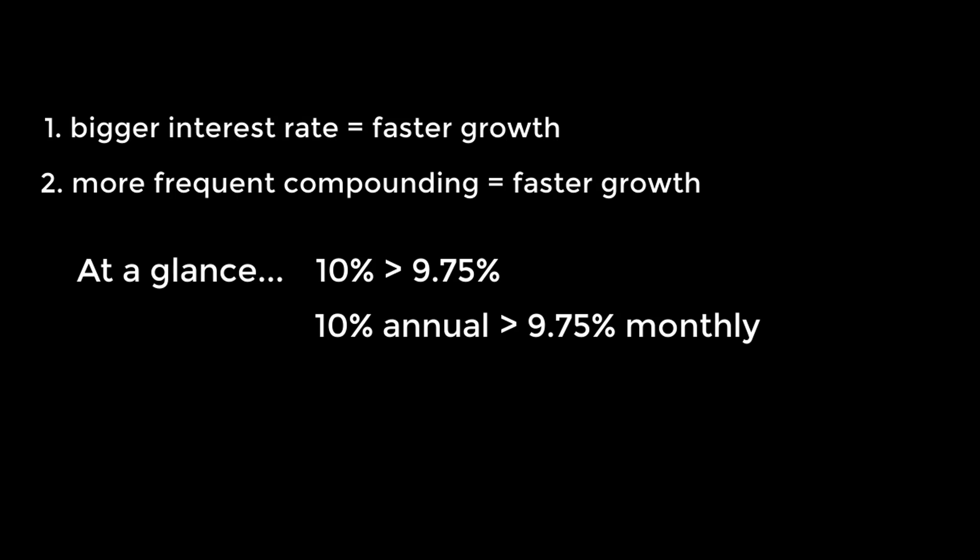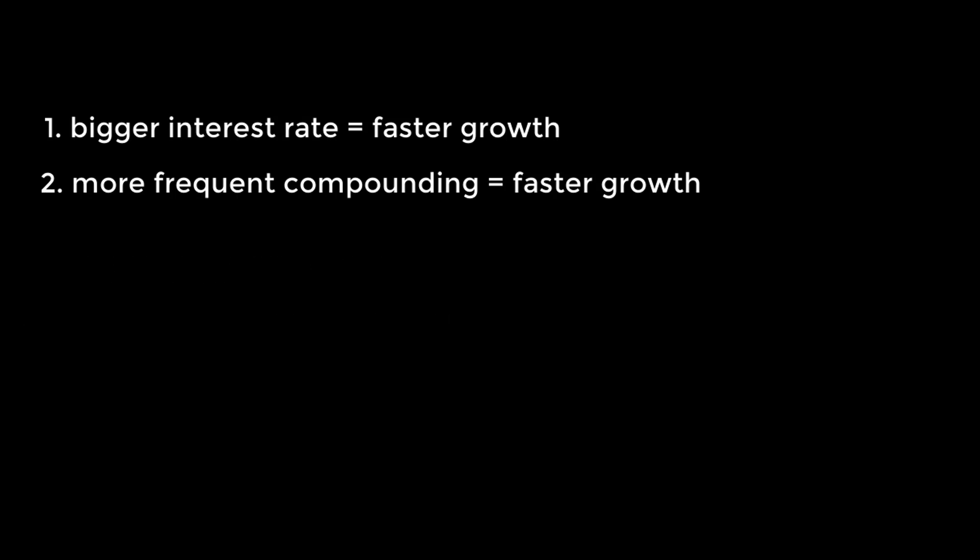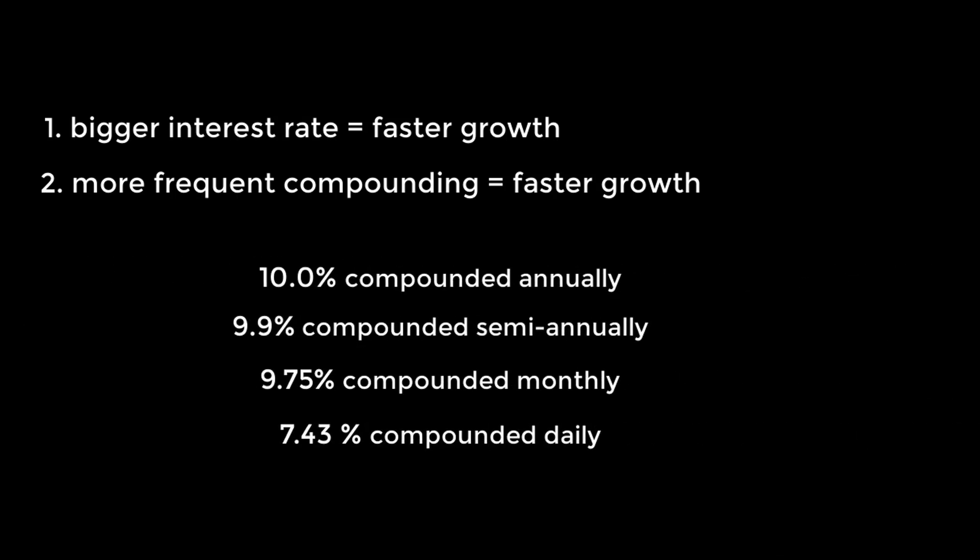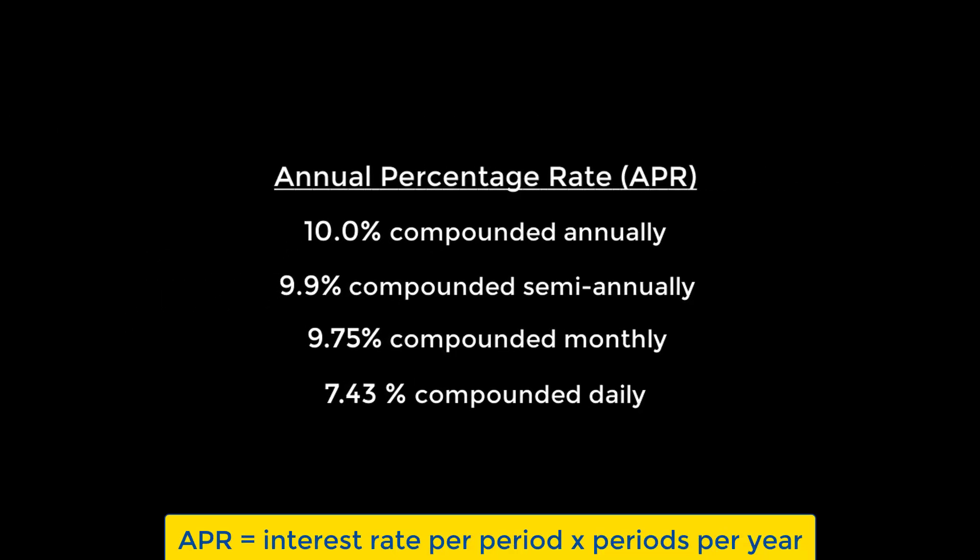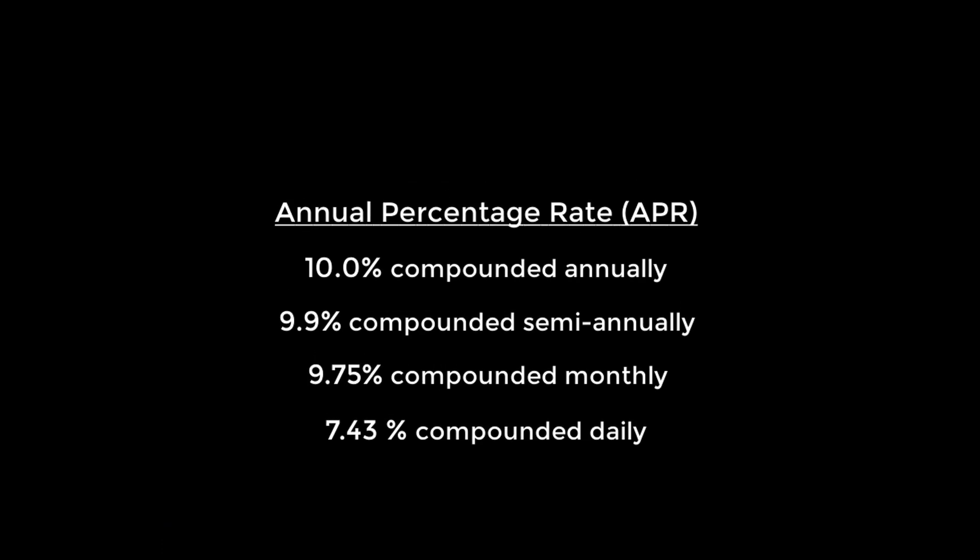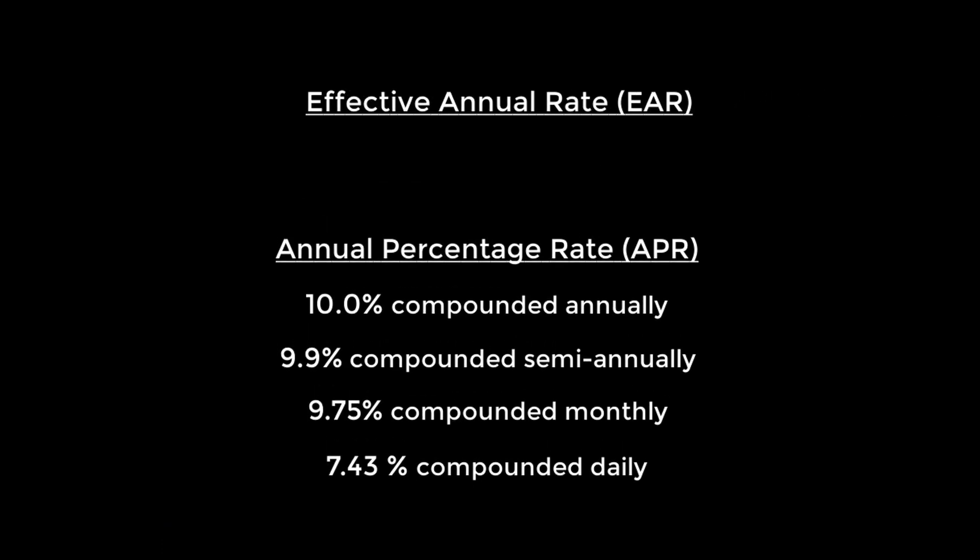Most lenders are required by law to quote interest rates on an annual basis, even when the interest might compound more frequently than that, like in most of these examples. When rates are stated in this form, they're called annual percentage rates, or APR. For our purposes, namely comparing and calculating stuff, the APR is not what we want. We want to somehow convert APRs into a form where they all tell us how much interest we actually earn over a period of the same length, usually a year. When the rates are stated in this manner, they're called effective annual rates, or EAR.